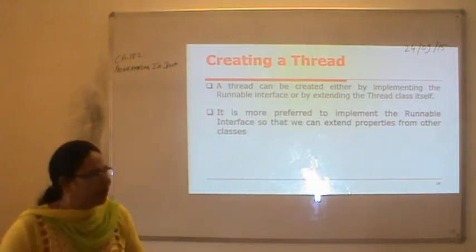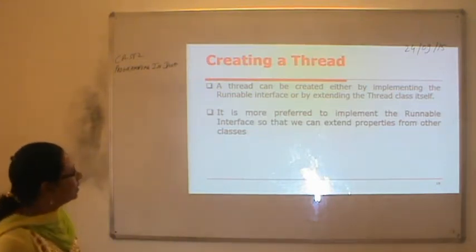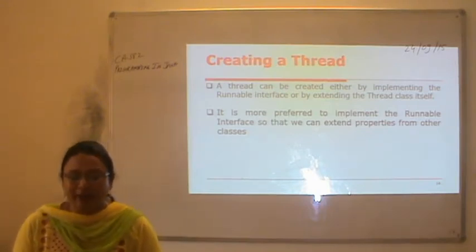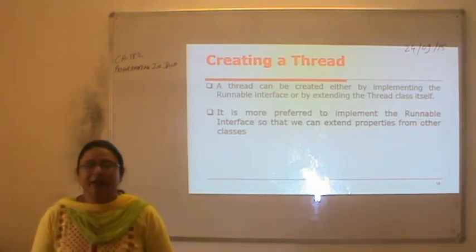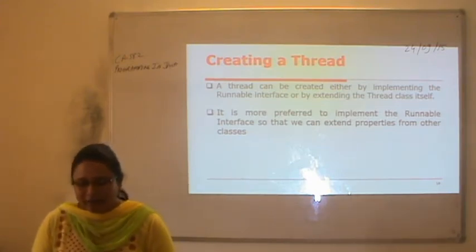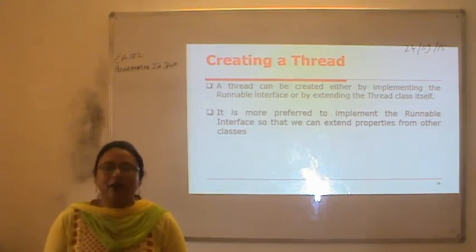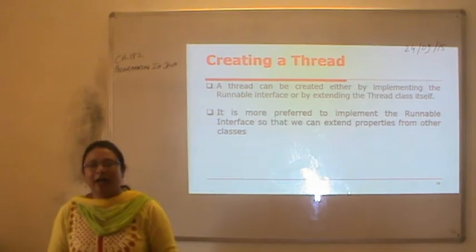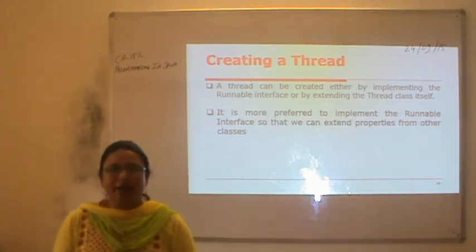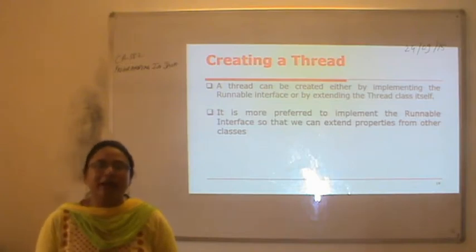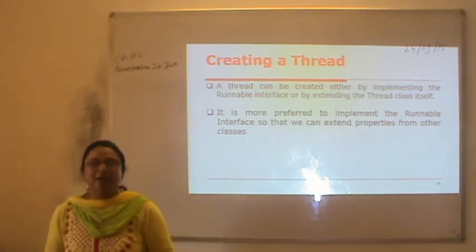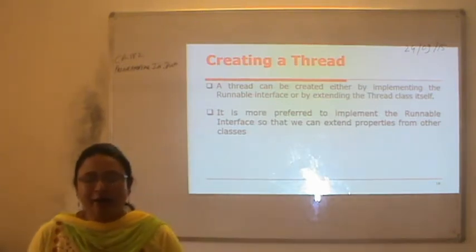How to create a thread? There are two methods. It can be created either by implementing the Runnable interface, or by extending the Thread class. When extending the Thread class, since a class can extend only one class, we cannot extend any other class. That is a drawback of creating a thread by extending Thread. By implementing the Runnable interface, we can implement multiple interfaces and still extend another class, so it is more preferred.